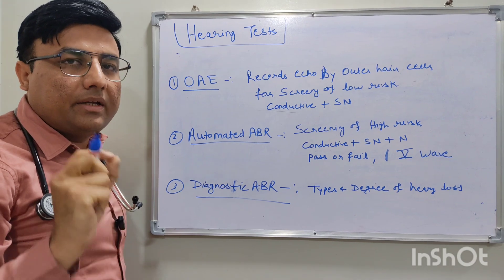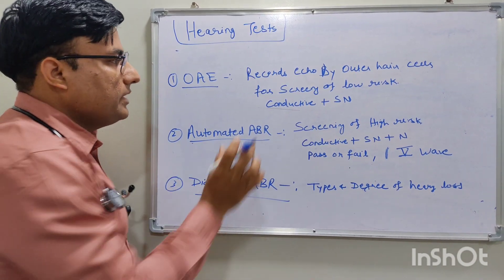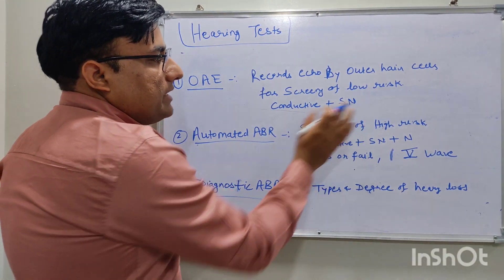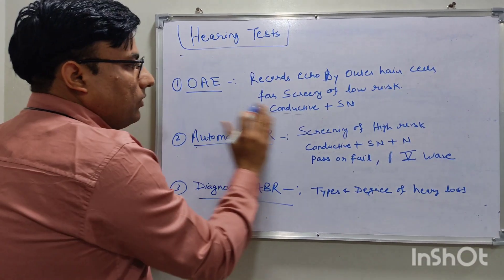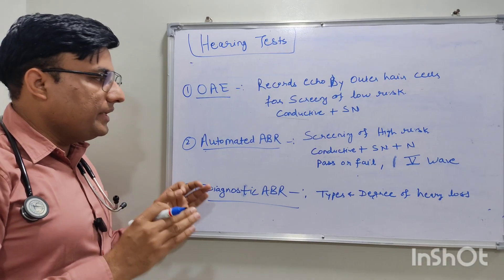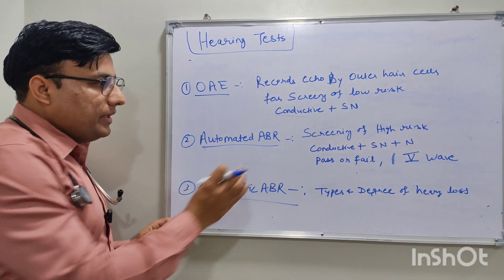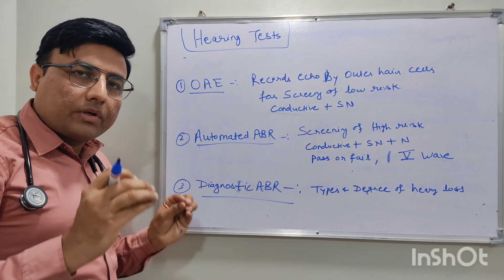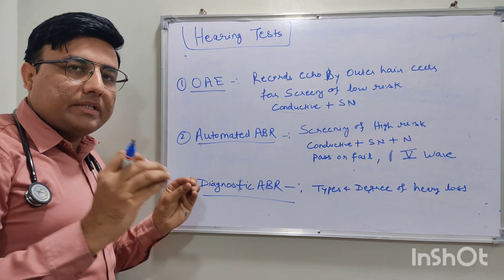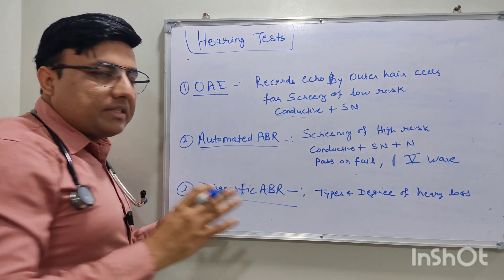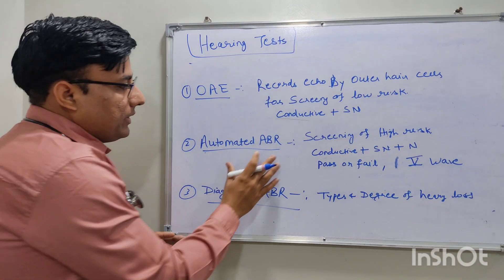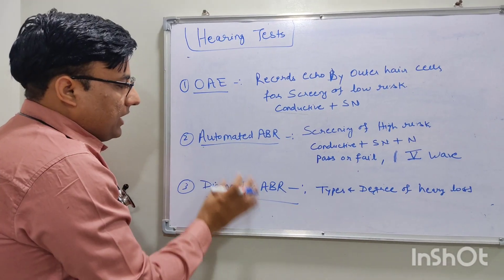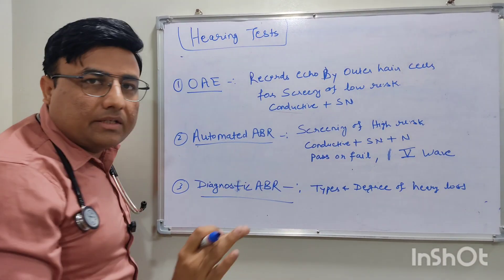OAE is used for screening in low-risk, healthy newborn babies. OAE can detect both conductive and sensorineural hearing loss. For ABR — auditory brainstem response — we detect electrophysiological activity from the cochlea, auditory brainstem, and auditory cortex using surface electrodes on the skull. ABR has two types: automated ABR, which is a screening test, and diagnostic ABR.